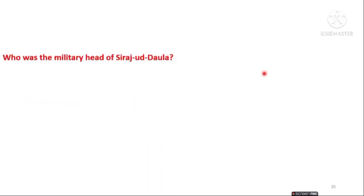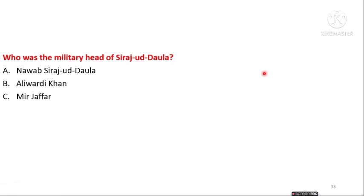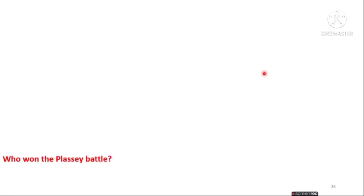The next question is: who was the military head of Siraj ud-Daulah? The options are Nawab Siraj ud-Daulah, Aliwardi Khan, Mir Jafar, and Murshid Ali Khan. The answer is Mir Jafar, who was the military head of Siraj ud-Daulah.